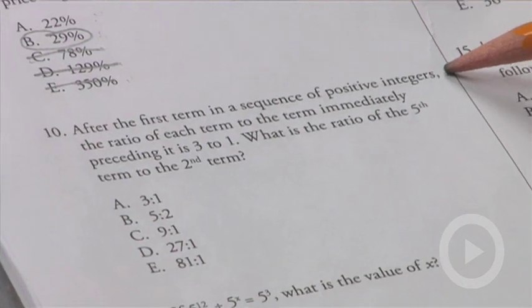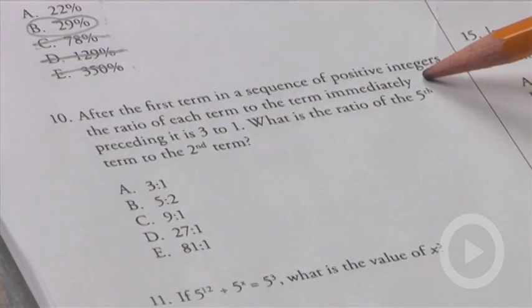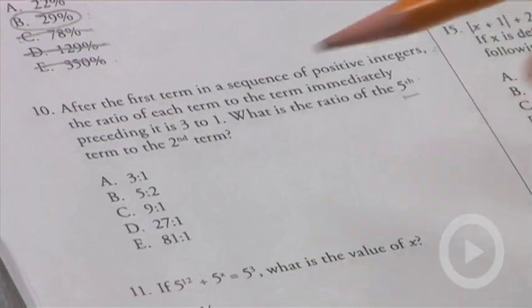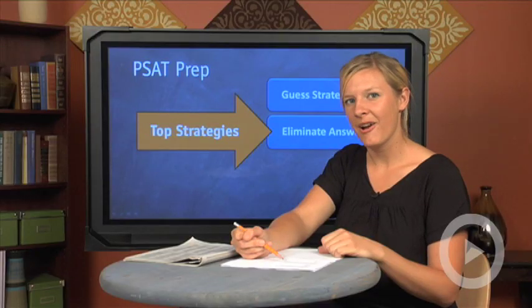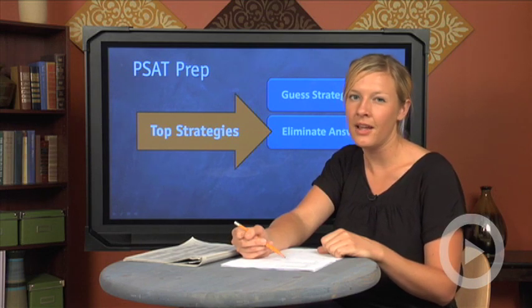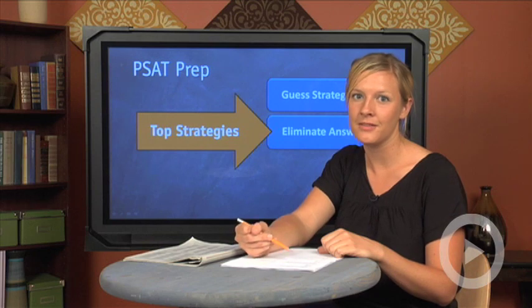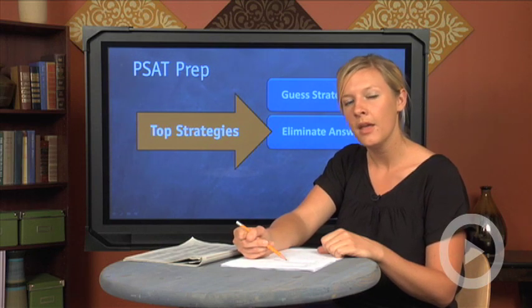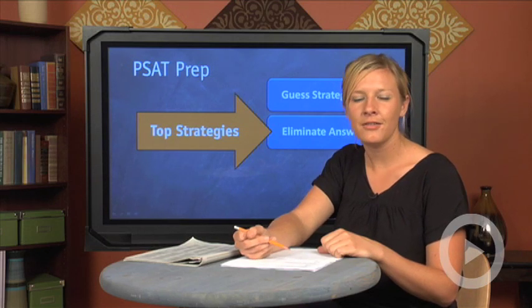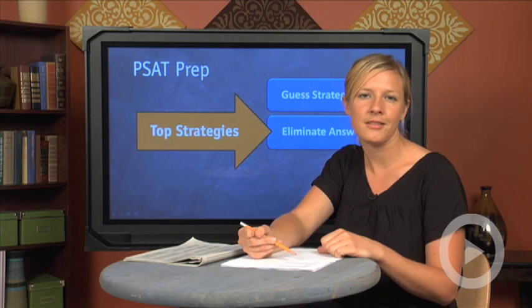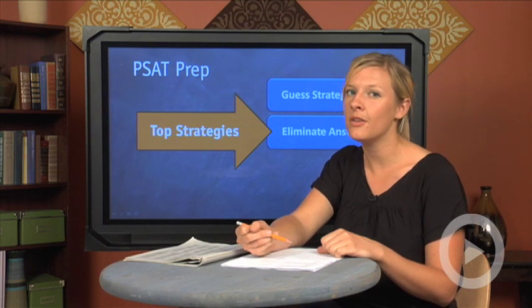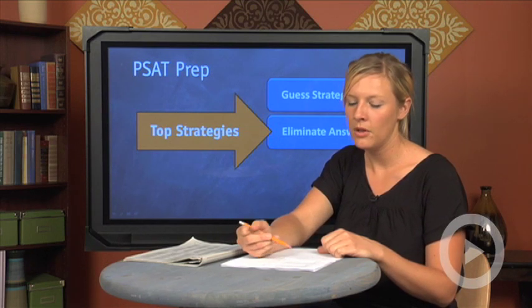Let's look at the next problem: After the first term in a sequence of positive integers, the ratio of each term to the term immediately preceding it is 3 to 1. What is the ratio of the fifth term to the second term? In the math section, you can eliminate answer choices that are way out there or misfits, and usually you can eliminate answer choices that repeat numbers from the problem. In critical reading and writing, you eliminate choices with lots of words, redundancies, or ones that don't make sense — but in math, those repeating-number choices are the ones to cut.